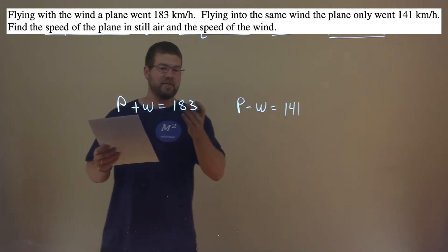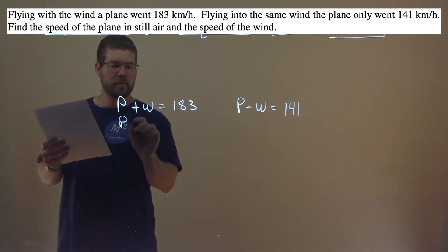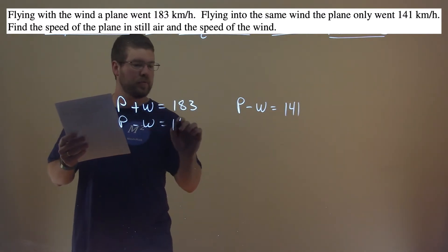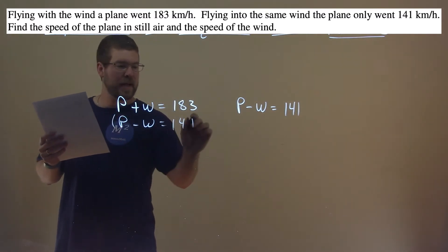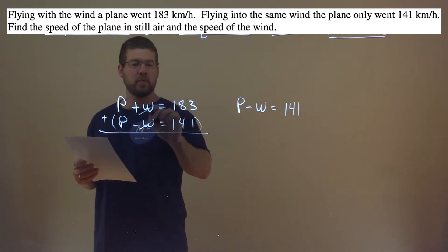So now we have our systems of equations we can solve. If we're going to use elimination, I'm going to bring it over here. P minus W equals 141. And actually, we're just going to add these two equations. By adding them, the variable W will cancel.